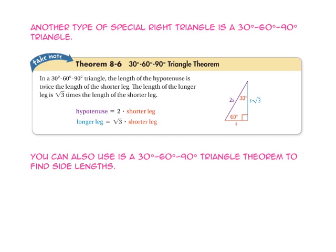Another type of special right triangle is a 30-60-90 triangle. In a 30-60-90 triangle, the length of the hypotenuse is twice the length of the shorter leg. The length of the longer leg is the square root of 3 times the length of the shorter leg. You can use the 30-60-90 triangle theorem to find side lengths.